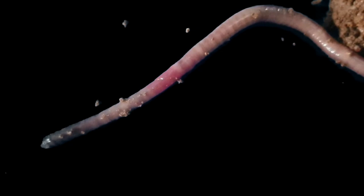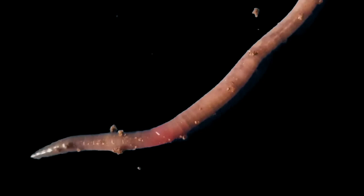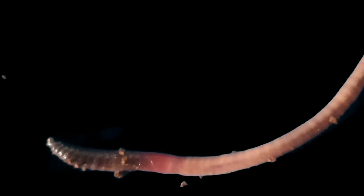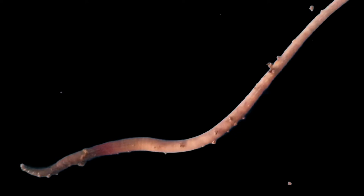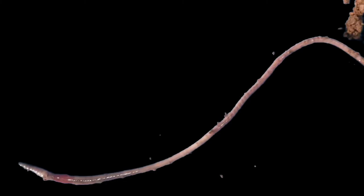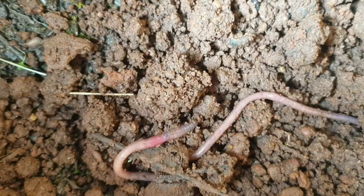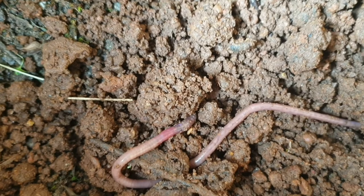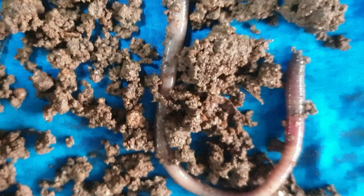During movement, the earthworm first extends the front part of the body, keeping the rear portion fixed to the ground. Then it fixes the front end and releases the rear end. It then shortens the body and pulls the rear end forward, making it move forward by a small distance. Repeating such muscle expansions and contractions, the earthworm can move through soil.